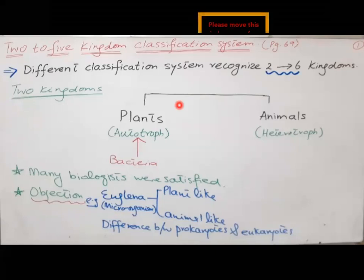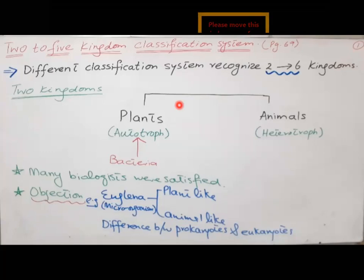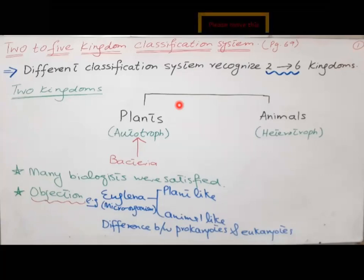Different classification systems recognize two to six kingdoms, but we are starting from the two kingdoms. For many centuries, two kingdoms existed: plants and animals. Plants are autotrophs and animals are heterotrophs. Plants have pigments with the help of which they can prepare their own food by the process of photosynthesis, whereas animals are consumers as they depend upon the plants for their food.